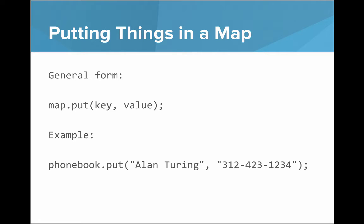If we want to put things in the map, the general form for that is map.put key, value. For example, to put an entry in our phonebook, we say phonebook.put, Alan Turing, and then a number for Alan Turing. If we call put with the same key, what that will do is actually overwrite the existing value because you can only have one value for every key.